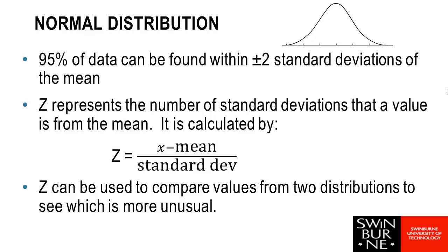Z is a convenient way for us to compare values from two different distributions to see which one is more unusual. The further from zero that a Z value is, the more standard deviations from the mean. Therefore, if we had one value which had a Z of 2 and another which had a Z of 3, the one with the Z of 3 is three standard deviations from the mean, whereas the Z of 2 is only two standard deviations from the mean. So the Z value of 3 we would consider to be a more unusual value.